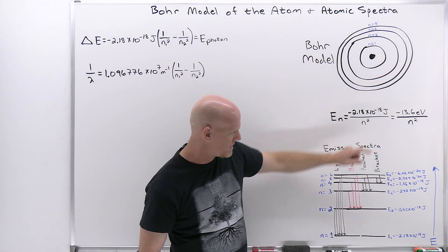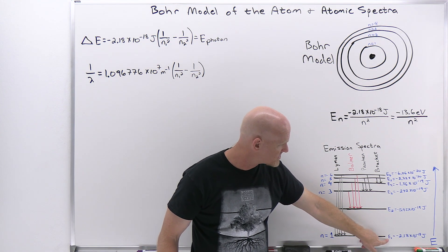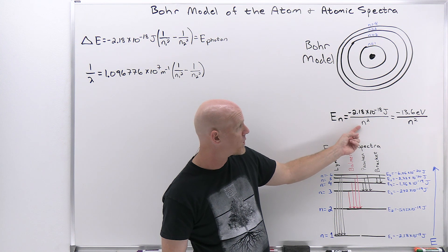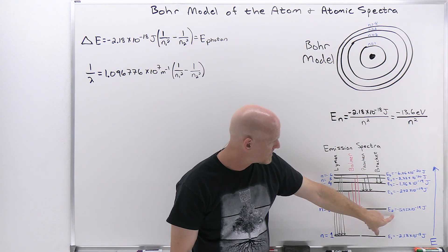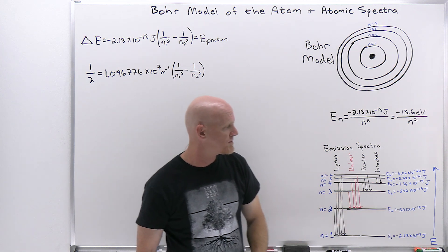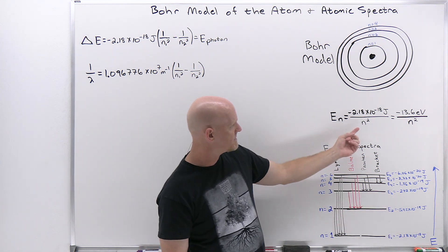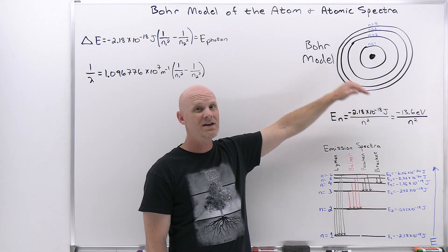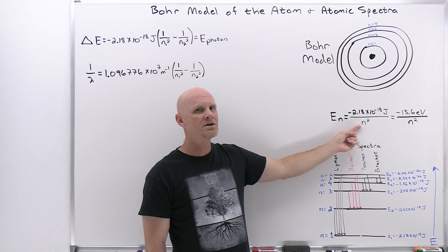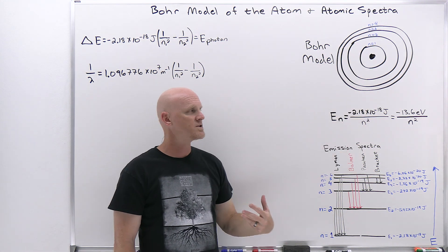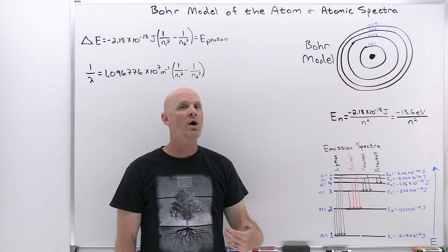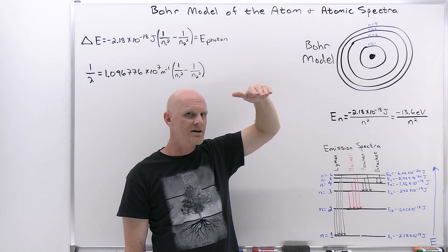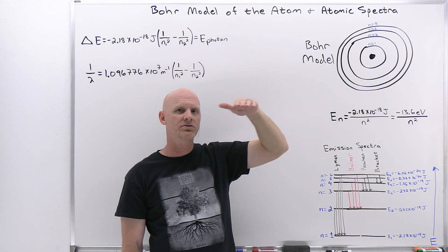Plugging in n=1 gives an energy of −2.18 × 10⁻¹⁸ J. The second orbit gives this value divided by four, which is −5.45 × 10⁻¹⁹ J. Plugging in three, four, five, six squared gives the other values. As n goes to infinity, dividing by infinity squared gives zero. So the first orbit has the lowest (most negative) energy, and as you go higher and higher, the energy approaches zero — meaning the electron at infinite distance from the positive nucleus has zero associated potential energy.